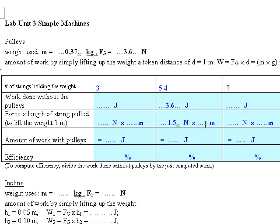And for how much string do I have to pull in order to lift the weight 1 meter? Well, there are 4 strings holding up the pulley, and each one of these needs to be pulled up 1 meter, so I need to pull a total of 4 meters of string.